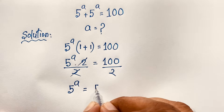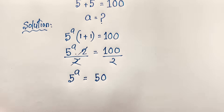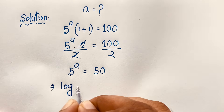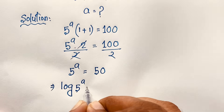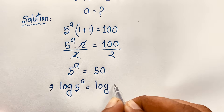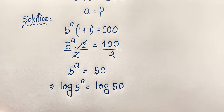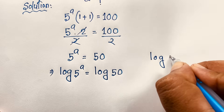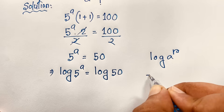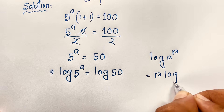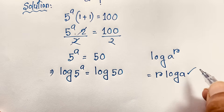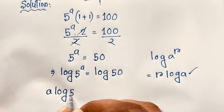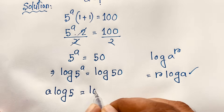We find out 5 to the power a is equal to 100 divided by 2, which will be 50. Now I use the natural log on both sides, so log of 5 to the power a is equal to log 50. According to the exponential formula, log of a to the power r is equal to r times log a.